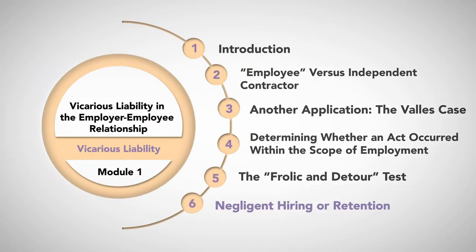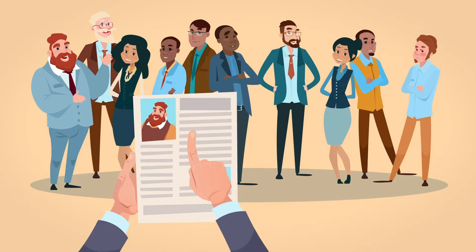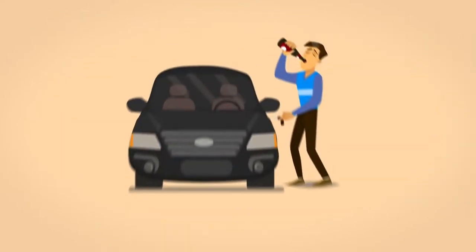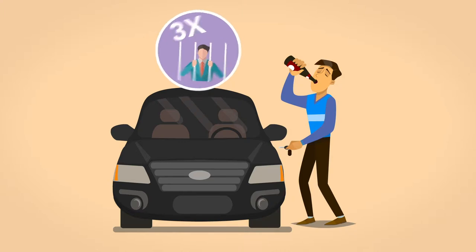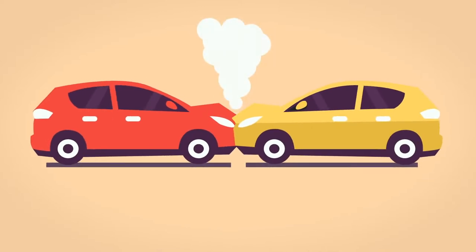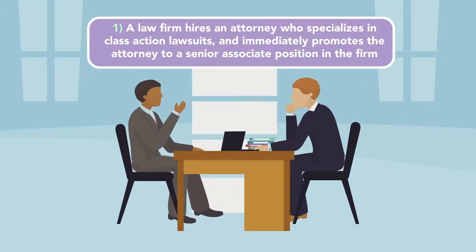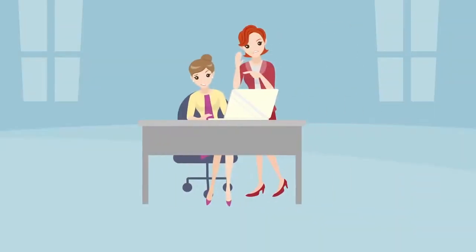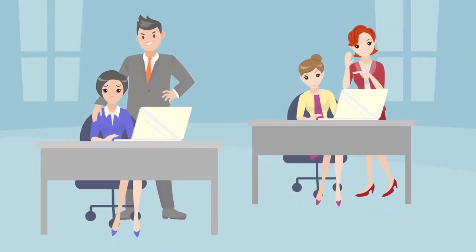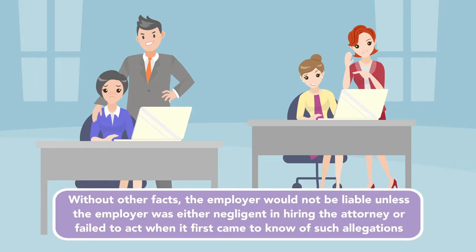Negligent hiring or retention. Employers may also be liable if they are negligent in selecting, hiring, or retaining an employee. For example, if an employer hires someone who has been convicted three times of driving while intoxicated and instructs him to operate motor vehicles during business hours, the employer may be liable if the employee negligently strikes another vehicle or person while intoxicated. Example one: A law firm hires an attorney who specializes in class action lawsuits and immediately promotes the attorney to a senior associate position. Three months later, two women who work at the firm allege the attorney sexually harassed them. Without other facts, the employer would not be liable unless the employer was either negligent in hiring the attorney — such as if the employer knew of prior claims of sexual harassment — or failed to act when it first came to know of such allegations.